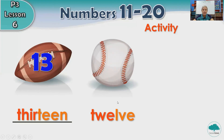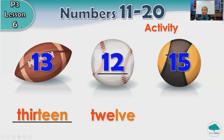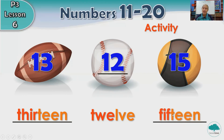Now let's have a look. Look at the word. It begins with letter T. Can you guess what number this is? It's number 12. Very good. How do we write number 12? We have numbers 1 and 2. 12. Can you read the number? We have a 1 and a 5. What number is this? 15. Very good. How do you spell 15? F-I-F-T-E-E-N. 15. Great job.